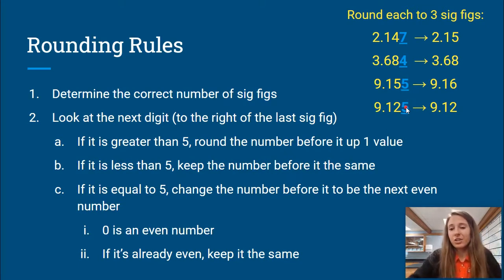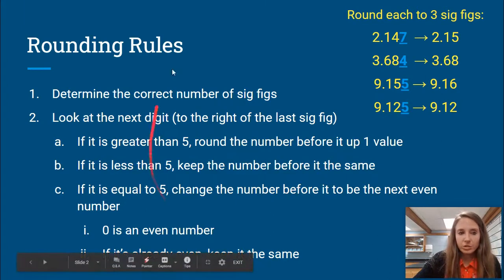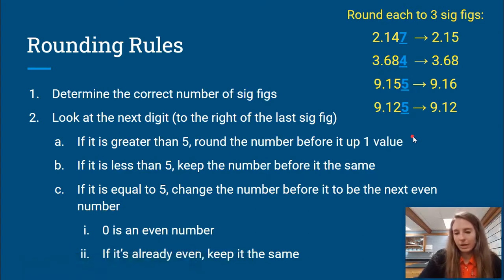So statistics say that you are going to round this number up half of the time, because there's an equal number of evens and odds between zero and nine. So that is going to be the rounding rules that we follow just to help make our calculations and measurements as precise as possible. And that's it for rounding rules.